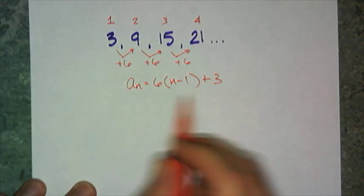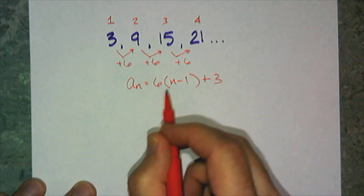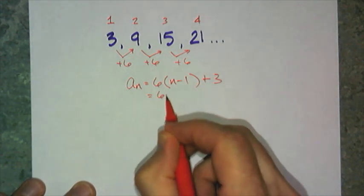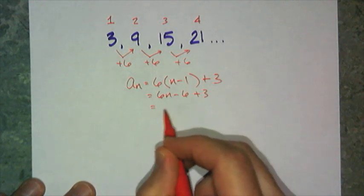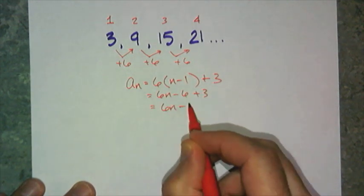You may also see me, well, if you simplify this, that's 6n minus 6 plus 3, and that would be 6n minus 3.